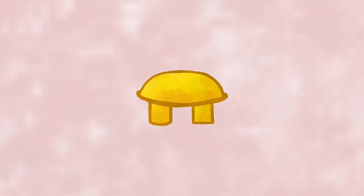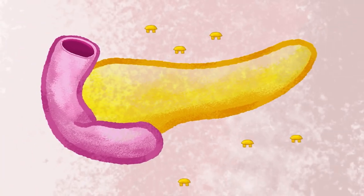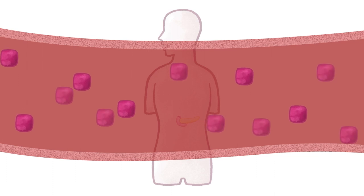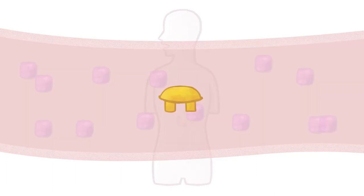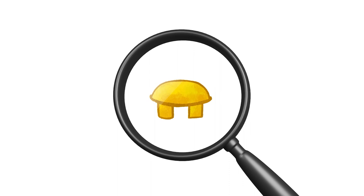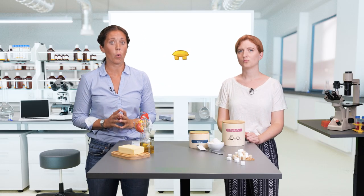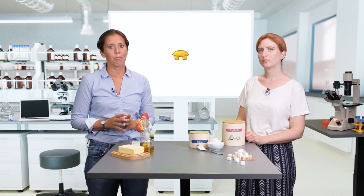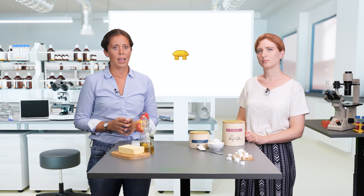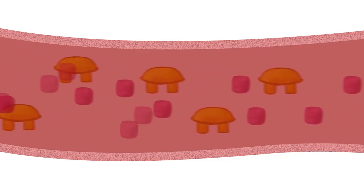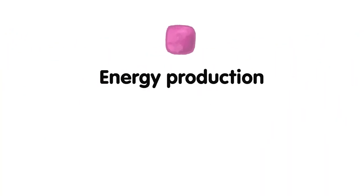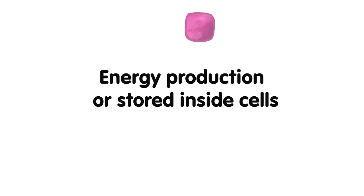Insulin is a small hormone that is released by the pancreas when you have just eaten a meal and the blood glucose levels rise in your bloodstream. Insulin is one of the best studied hormones in our body. It was first isolated about 100 years ago, and even though we know a lot about it, researchers still find out new things. Its primary task is to stimulate the uptake of glucose into cells. This glucose is either used for energy production or is stored inside the cells.